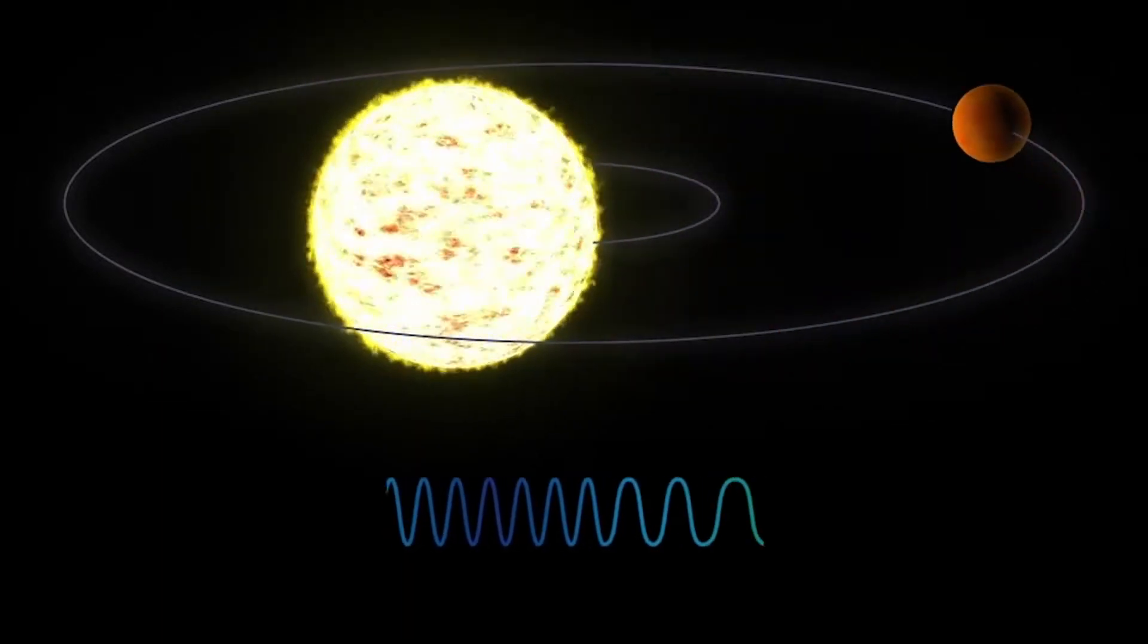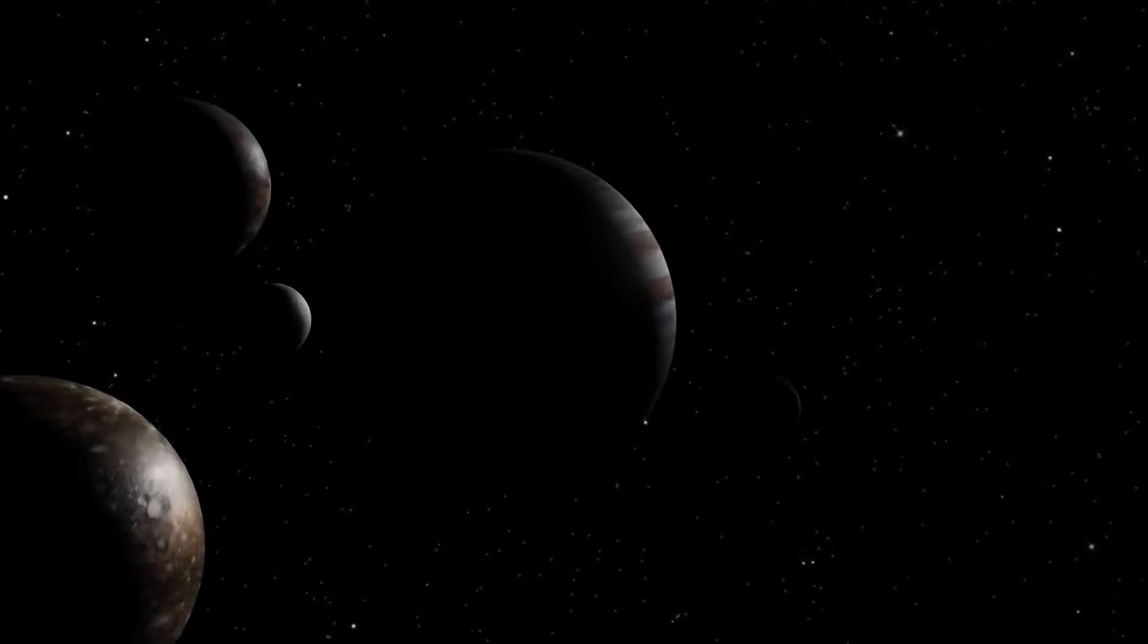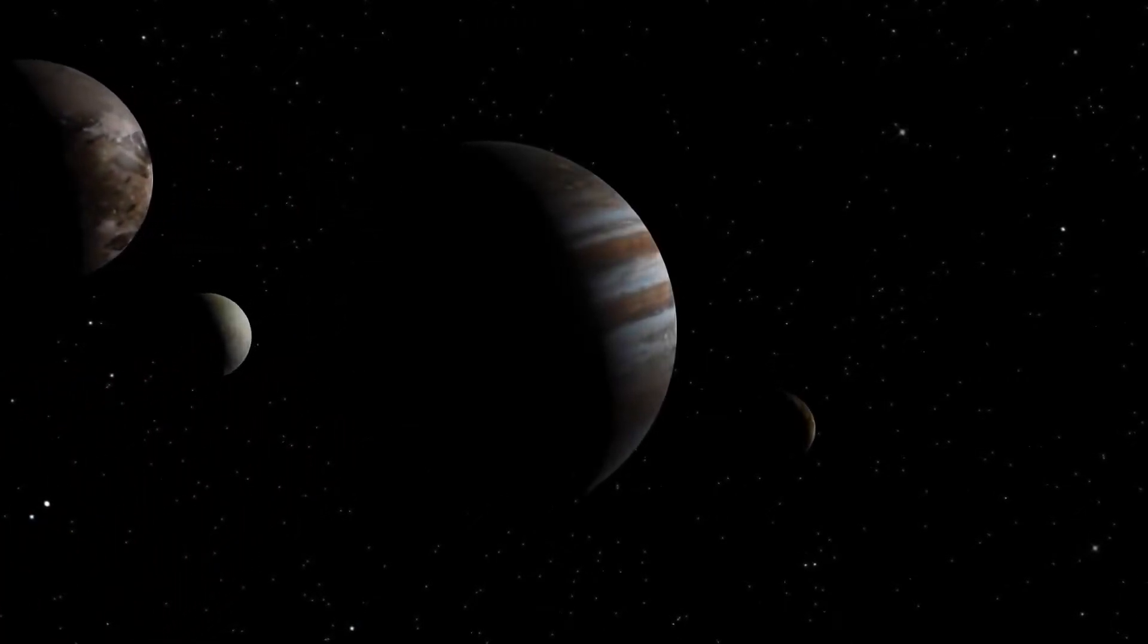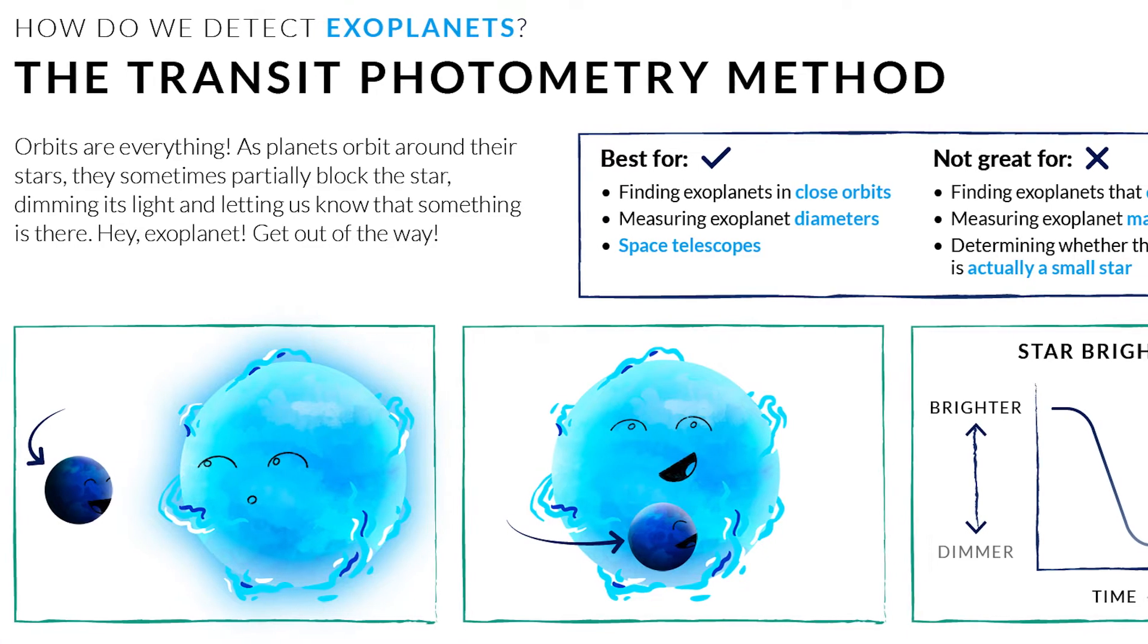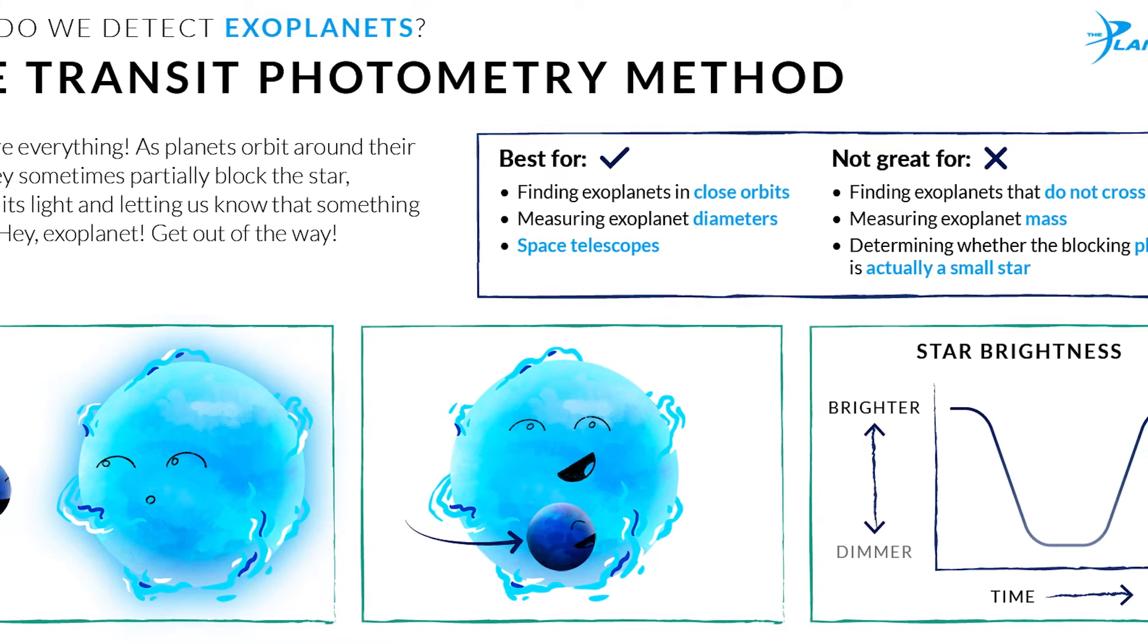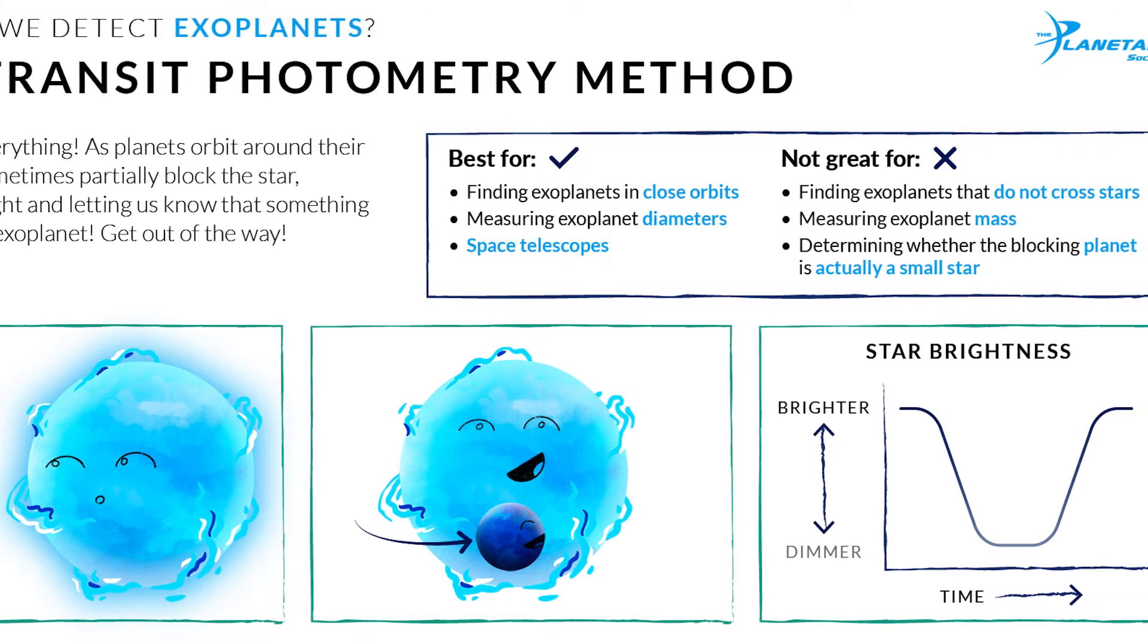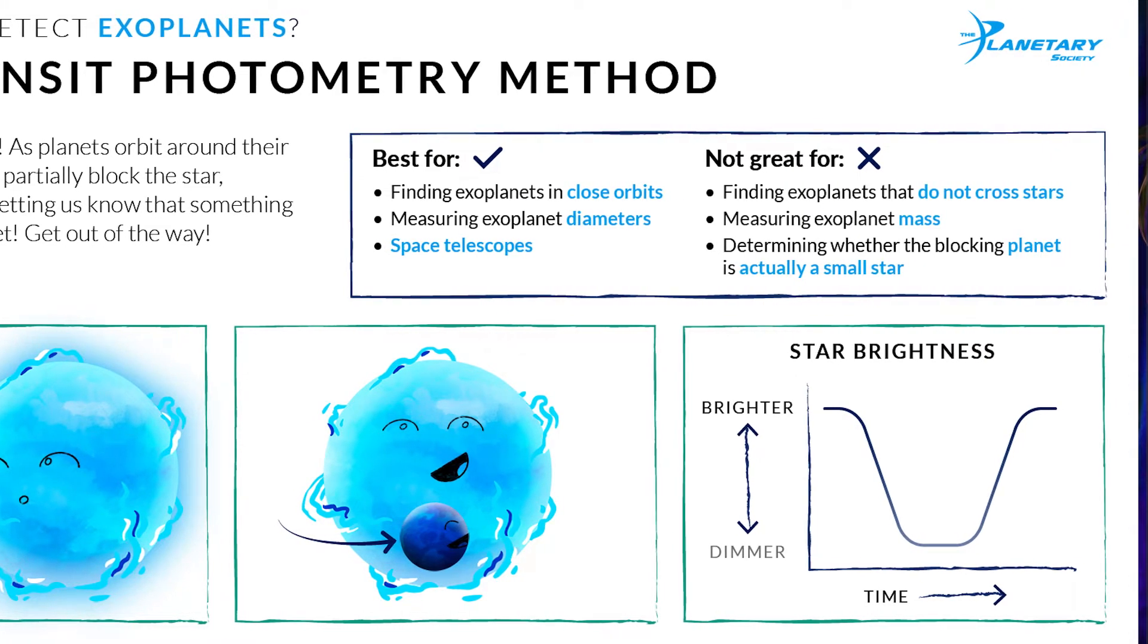Even though the speed of a star around its center of mass is far slower than that of a planet, it can be measured using modern spectrometers. This approach was the most successful at finding exoplanets until 2012, when it was surpassed by transit photometry. Nonetheless, it is a highly successful approach that is frequently used in tandem with the transit method to prove the presence of exoplanets and constrain their size and mass.